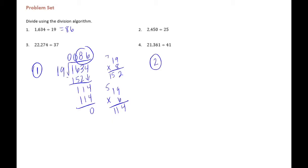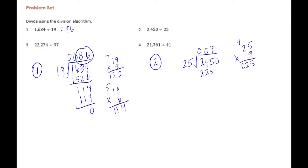Number two: 2,450 divided by 25. 25 can't go into 2 or 24, so we go into 245. 25 times 10 is 250, so I'll bet it can go in 9 times. 9 times 5 is 45, carry the 4; 9 times 2 is 18, plus 4 is 22 — so 225. Subtract to get 20, bring down the 0. 25 goes into 200 eight times, since 25 goes into 100 four times. 8 times 25 is 200, no remainder. Quotient is 98.